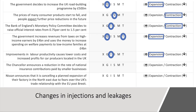Sixth: the Chancellor announces a reduction in the rate of national insurance contributions paid by smaller businesses when they take people on. I think the answer here is that's a fall in a leakage — a fall in taxation — which will be expansionary to the economy, as it reduces the cost of taking on workers.